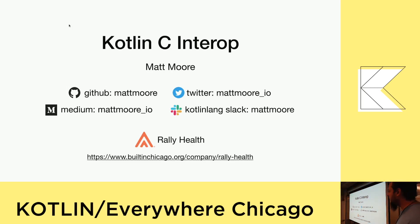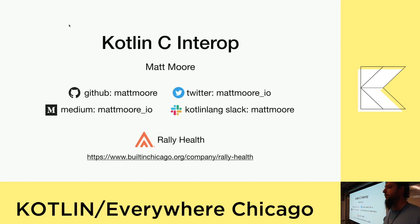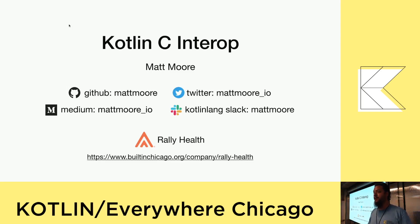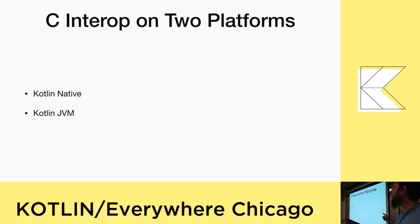Welcome everyone. Today I'm going to talk about Kotlin C interop. What is this all about? Kotlin is a wonderful language, but what if you have existing native libraries in C or C++ on Linux, Mac OS, or whatever system you might be running, and you want to access those from within Kotlin without having to actually write C code to use them. I'm going to talk about two ways to do this: Kotlin native and Kotlin JVM. We're going to start with Kotlin native first and then go into JVM.